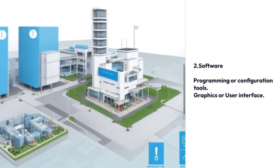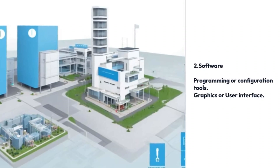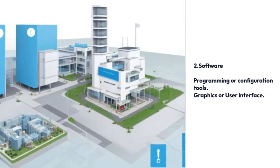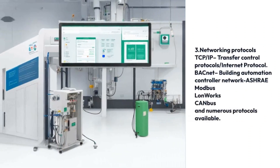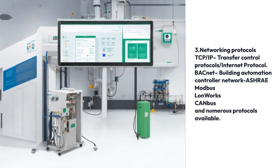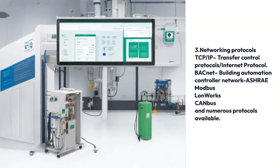Number two is software — programming or configuration tools, graphics, or user interface. Number three is networking protocols: TCP/IP (Transfer Control Protocol / Internet Protocol) and BACnet (Building Automation Controller Network).